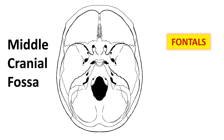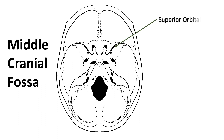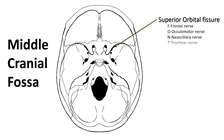Use 'FRONTIALS' to remember the superior orbital fissure contents. They are the frontal nerve, oculomotor nerve, nasal ciliary nerve, trochlear nerve, abducens nerve, lacrimal nerve, and superior ophthalmic vein.